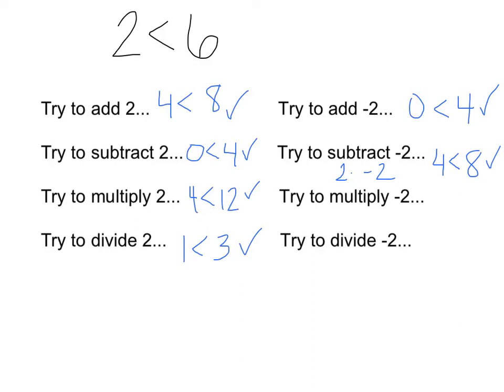Let's try multiplying by negative 2. 2 times negative 2 is negative 4. 6 times negative 2 is negative 12. Is negative 4 less than negative 12? No, it is not. So this is a huge red flag — drawing my little red flag there — because that does not work. To make it work, you'd have to flip the sign and make it negative 4 is greater than negative 12. That's the only way it would work.